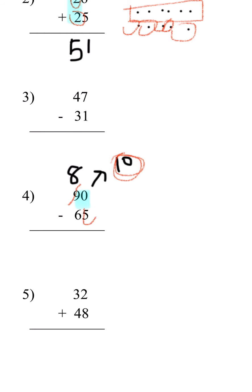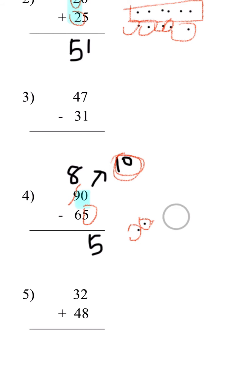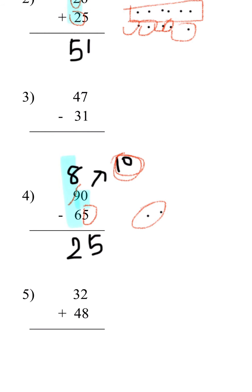10 minus 5 — we count and subtract 5 — so 10 minus 5 is 5. And we have 8 minus 6 in the tens place. We subtract 6 and we can see that we have 2 left. So the answer is 25.